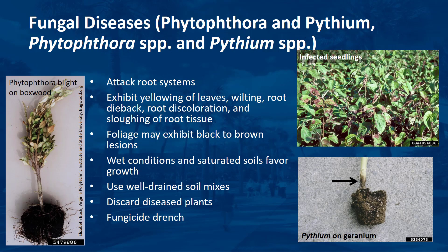Phytophthora and Pythium infections commonly attack the root systems of landscape ornamental plants. Plants infected with either of these pathogens exhibit yellowing of leaves, wilting, root dieback, root discoloration, and sloughing of root tissue. Under wet conditions, the foliage may exhibit brown to black lesions. Mycelial growth in the soil or on stems is rarely observed. Factors favoring the disease are wet, saturated soils. Use well-drained soil mixes, avoid saturated conditions, and discard plants that have disease symptoms. Sterilize used pots and trays. Drenches with fungicides such as etridiazole, pyraclostrobin, and phosphatidylaluminum are effective.